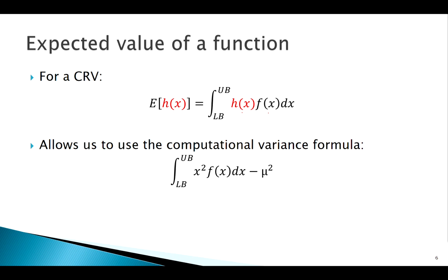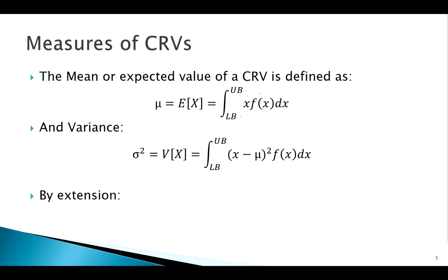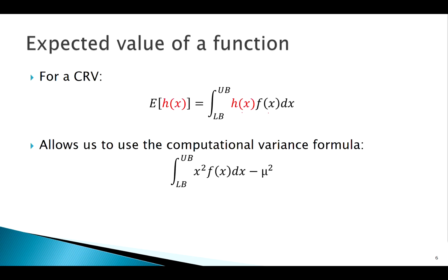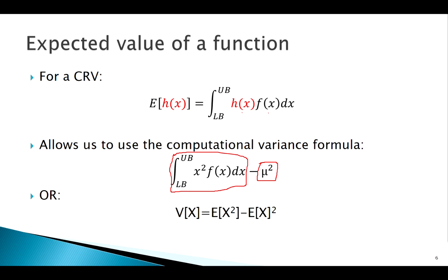The computational form is much easier to work with. Looking at the theoretical formula for variance, you'd have to integrate an expression requiring substitution and integration by parts. With the computational form, since E[X] is a constant, you're essentially just dealing with x squared — not that bad. The shorthand is: Var(X) = E[X²] − (E[X])². Those are all the big points with continuous random variables: notation, expected values, and variances using the computational form.